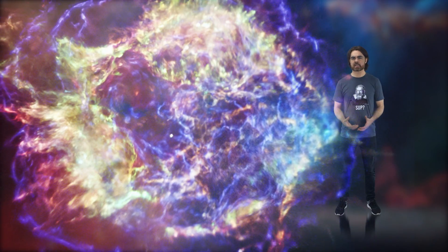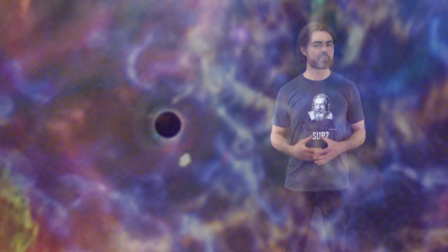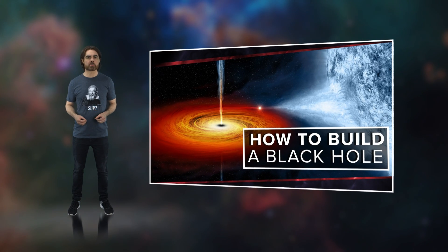Black holes form when the most massive stars end their lives in spectacular supernova explosions. After blowing off their outer layers, if the remaining stellar core is massive enough, it'll collapse into a black hole. We've discussed this whole process in an earlier episode.